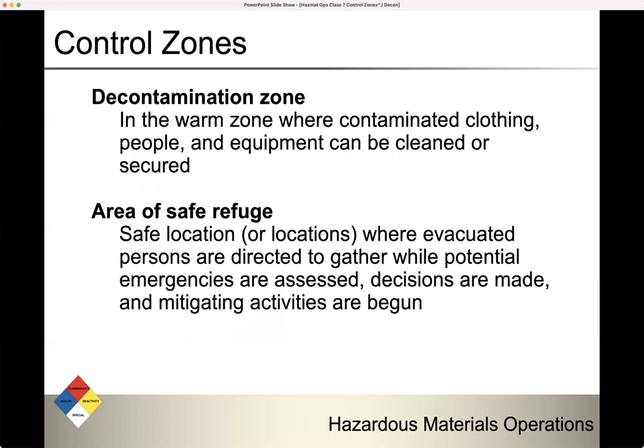When you arrive on scene, you have people who were in the hot zone. You can't just let them wander around, but you also can't leave them in the hot zone continuing to be exposed. If they are ambulatory, you need to get them to a safe location. They need to be upwind and uphill from the spill, but downwind and downhill of you.